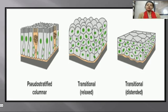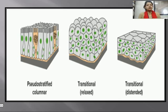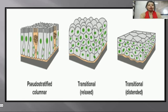An important characteristic of pseudo-stratified columnar epithelial tissue is that all cells touch the basal membrane, but not all of them reach the free surface. Cells that reach the free surface are columnar type; those that do not rest on the basal lamina and have a round nucleus.